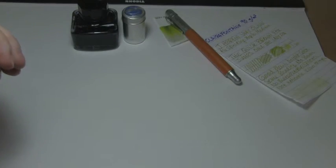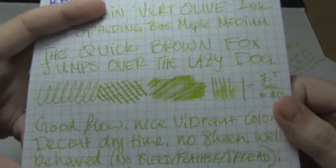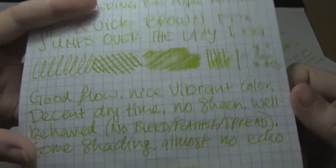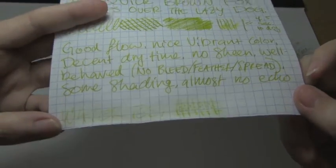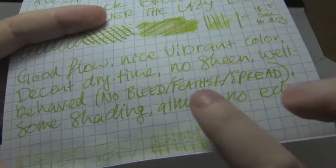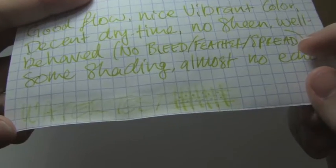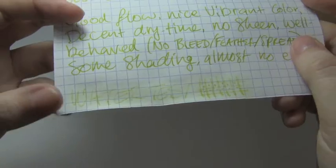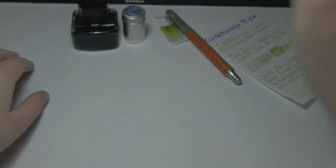Next is Rhodia 80 grams per square meter. Seven and a half seconds to dry, so that's an improvement. As you can see, it's still very light. It's very light green. Decent dry time, no bleed feather spread. Still some shading, like I think you can see in feather. The water test was a bit messy. It exploded in some parts a little bit, dyed the paper, and then where it washed away, it really washed away. But again, since it's such a light ink, not a lot of echo.